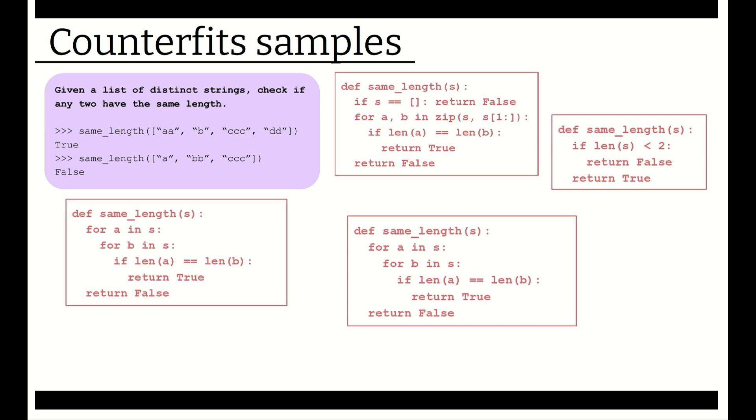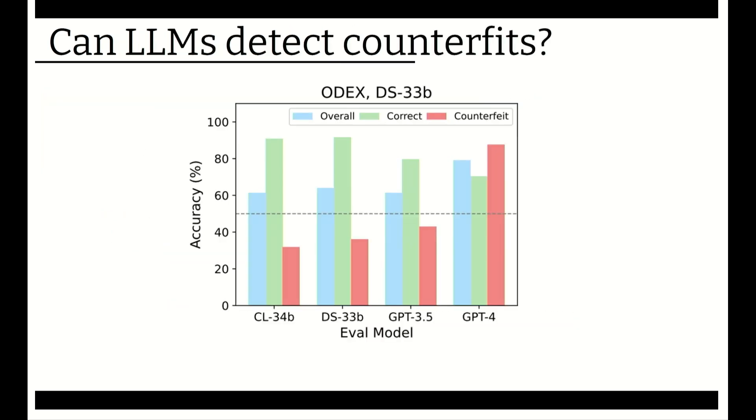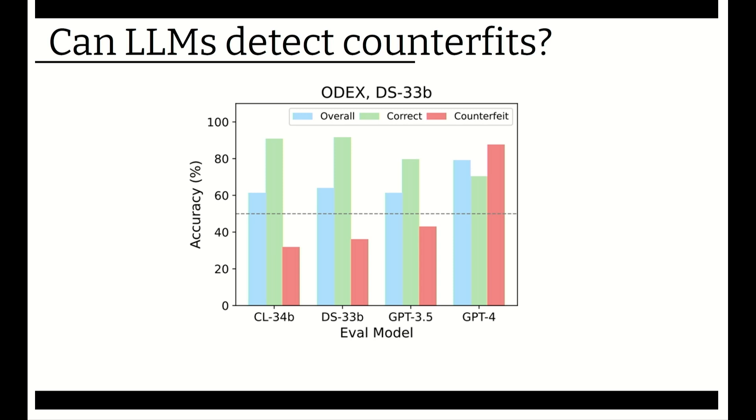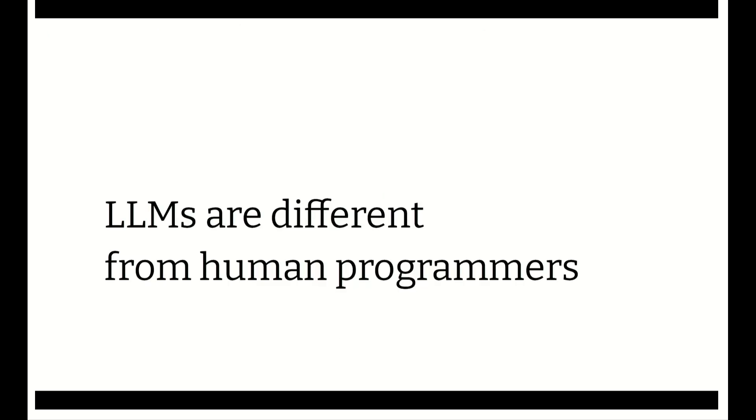But when you focus on solutions that kind of look correct but are not, it turns out that the ability of most of these models to tell them apart is actually just a little bit better than chance. GPT-4, again, does better than most of the other models, but it's still very far from what you would consider acceptable.